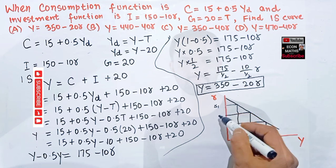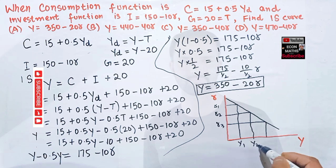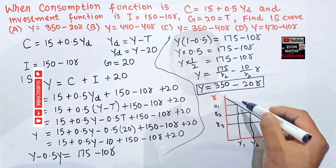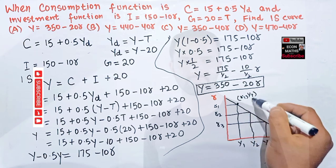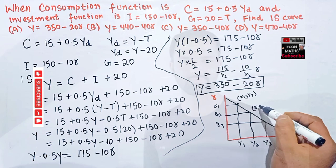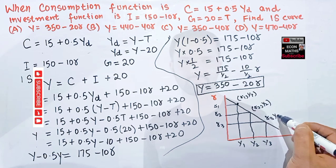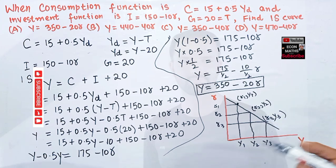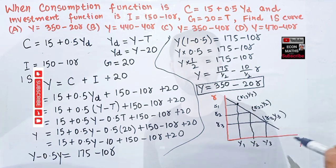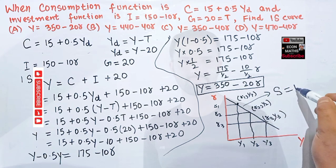The IS curve shows different combinations of rate of interest and level of income. For example, points (Y1, R1), (Y2, R2), and (Y3, R3) all lie on the IS curve. Every point on the IS curve represents a combination of income and interest rate where savings equals investment.